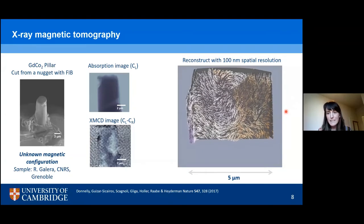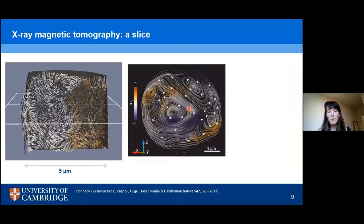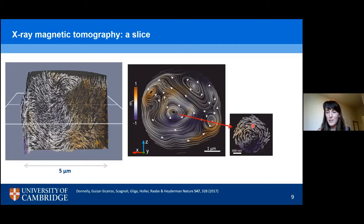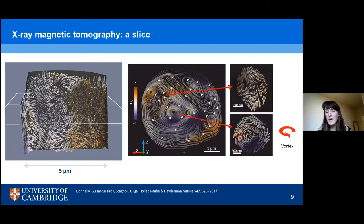We measure XMCD images for over 1000 different orientations of the sample with respect to the x-ray beam, and use our reconstruction algorithm to reconstruct the internal configuration with 100 nanometre spatial resolution. We have a relatively smoothly varying magnetization with a number of twists and turns that are particularly interesting. Looking at a horizontal slice — plotting the in-plane magnetization with streamlines and colour corresponding to the component perpendicular to the screen — we can immediately see a number of topological structures. This looks familiar and may remind you of weather forecasts, because these topological structures are not only seen in magnets but in many different types of systems. We see vortices where the magnetization curls around a central point, and anti-vortices which are the topological opposite of a vortex and have a more saddle-like structure. These vortices and anti-vortices form what is known as a cross-tie wall spanning the diameter of our micro-pillar.